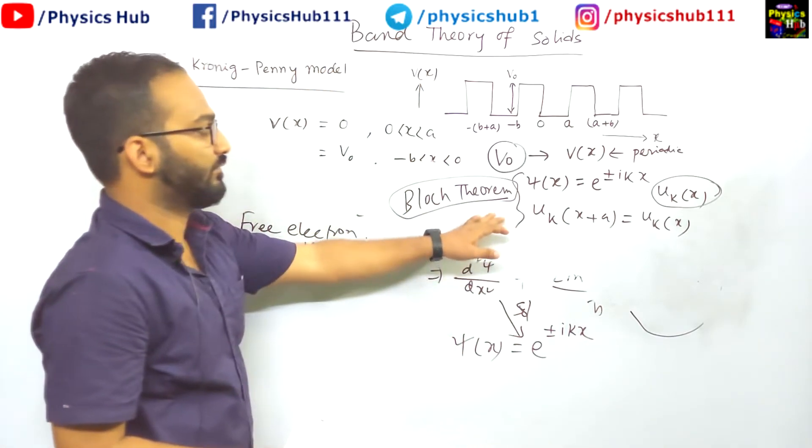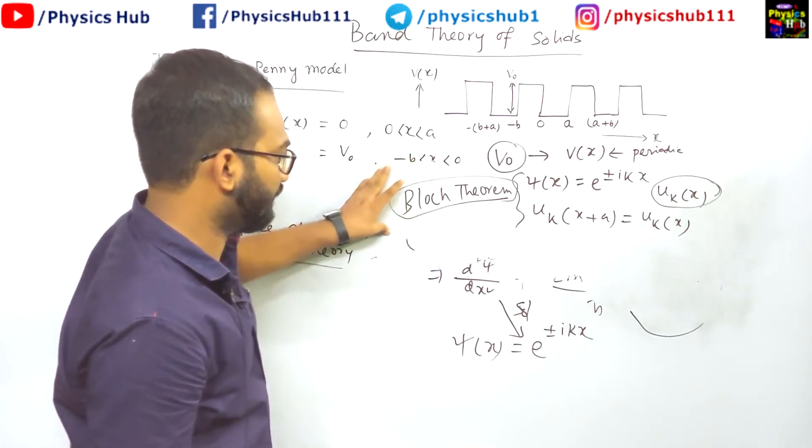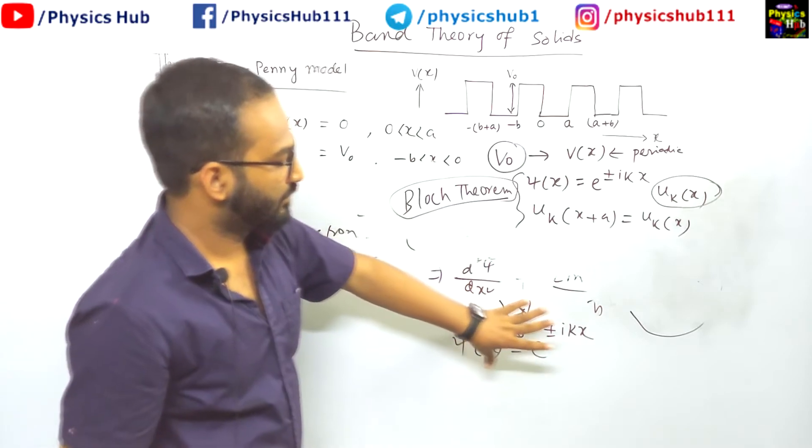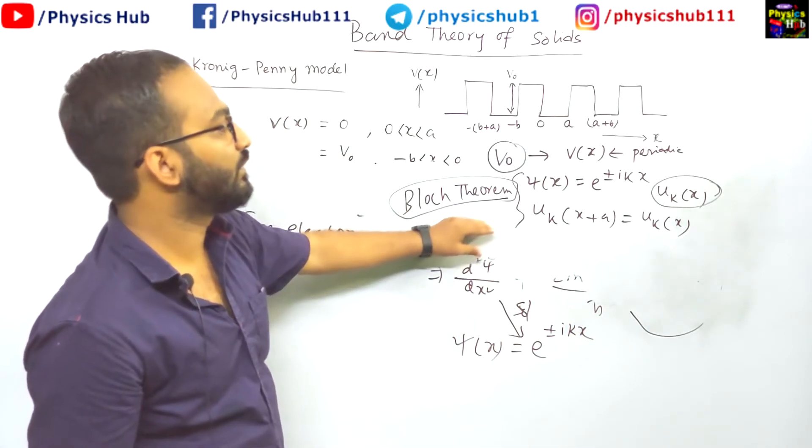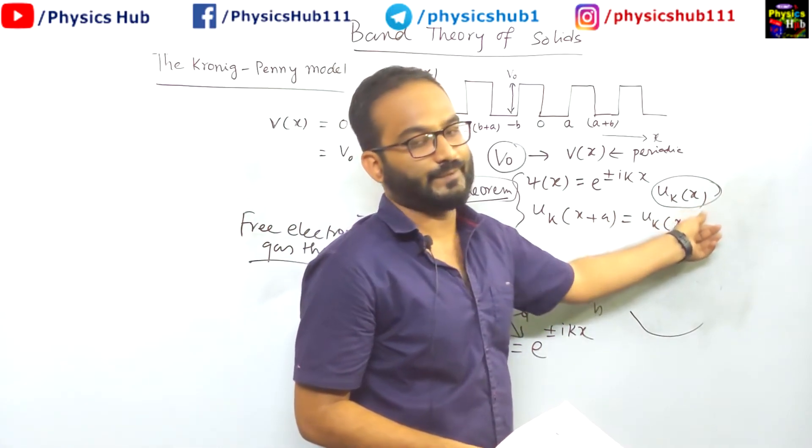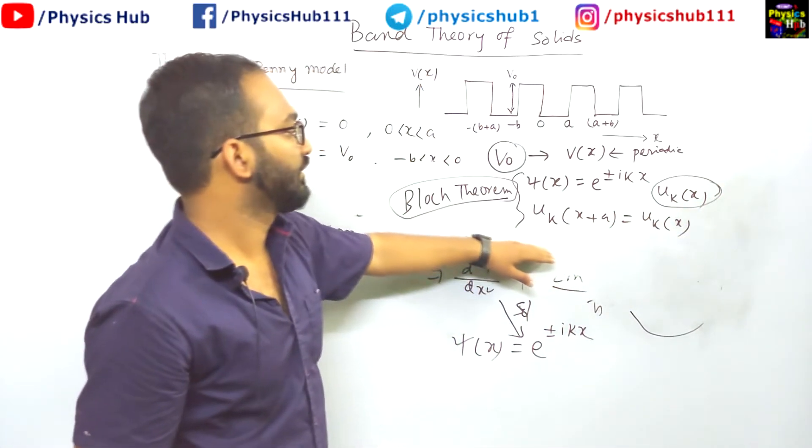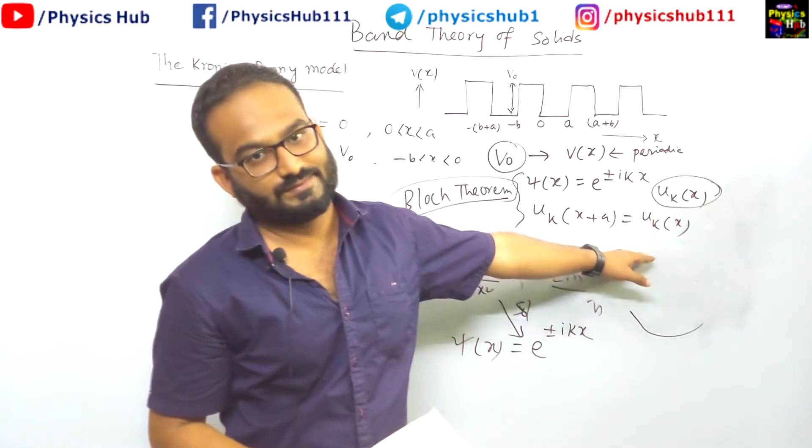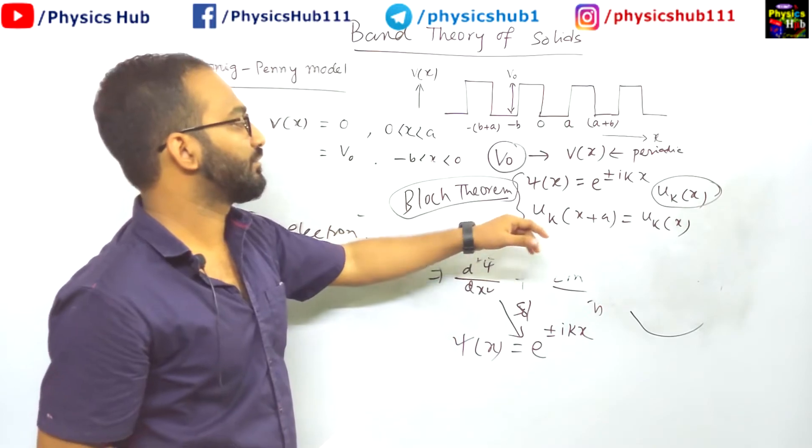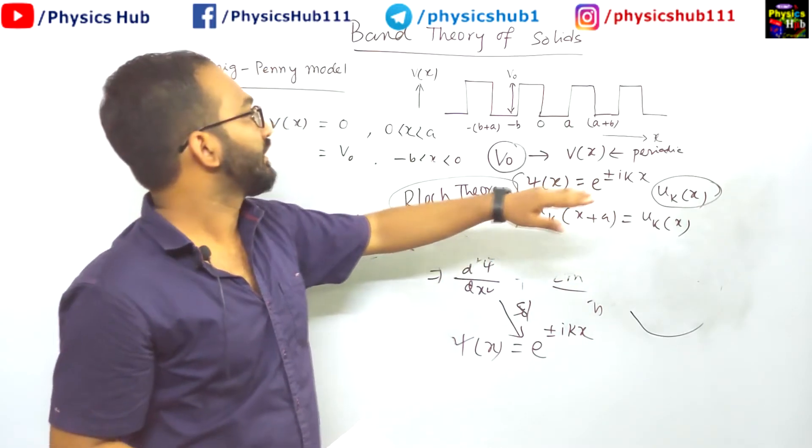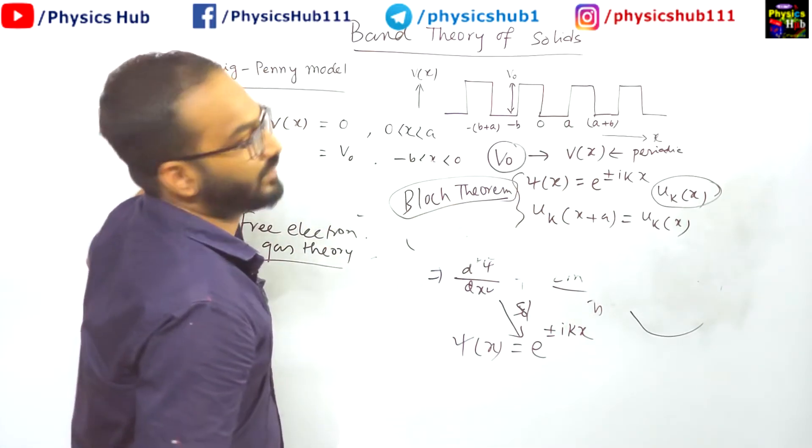So for a periodic function, according to the Bloch theorem, the solution of the Schrödinger equation, the plane wave solution of the Schrödinger equation gets modulated by a factor u k of x, which has the period of the crystal lattice. Okay. So we are now going to utilize this property into solving the Kronig-Penney model.